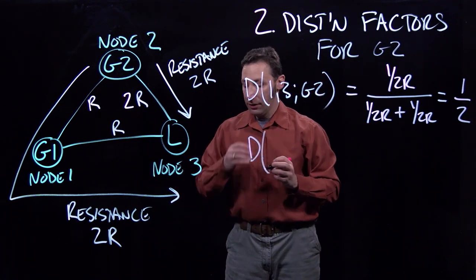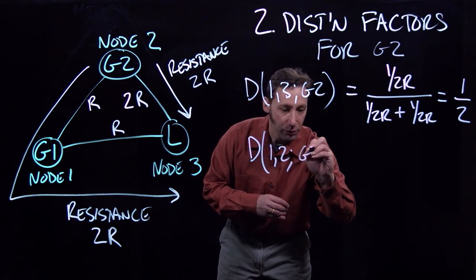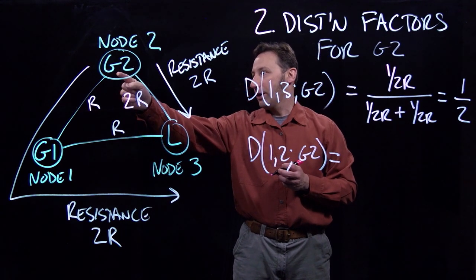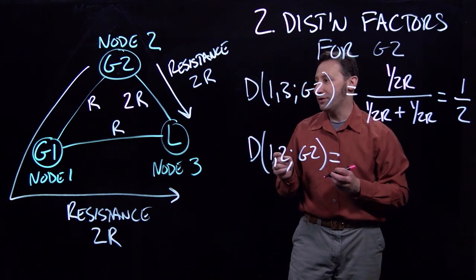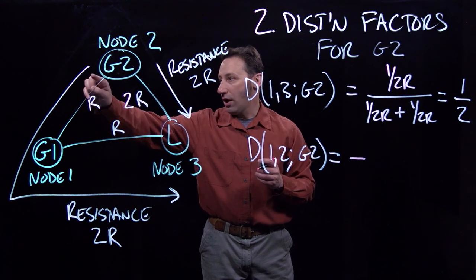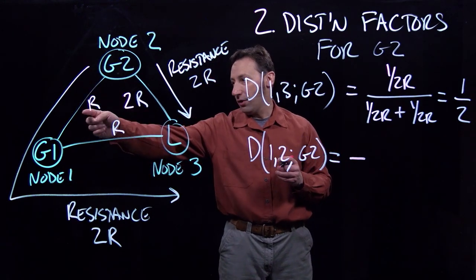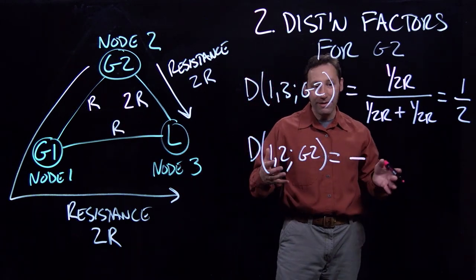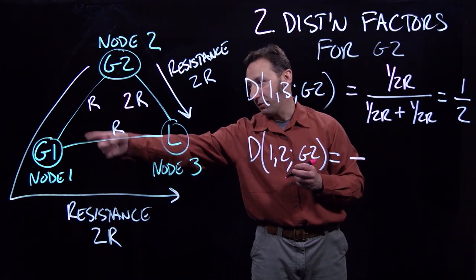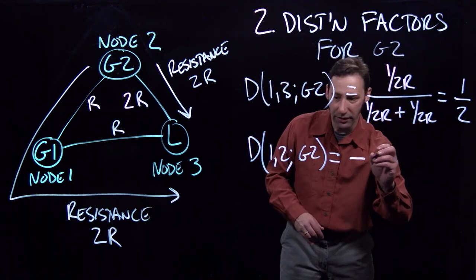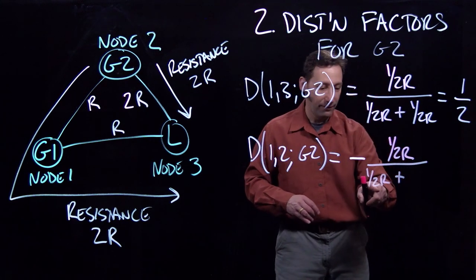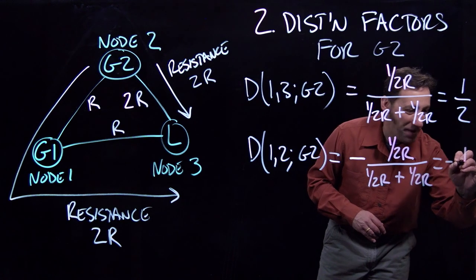The distribution factor on line 1 to 2 from G2 requires remembering that power going from node 2 to node 1 is in the negative direction, so there's a negative sign in front of the distribution factor. Both lines making up the indirect path have the same magnitude distribution factor. In the numerator we have 1 over 2R, and in the denominator 1 over 2R plus 1 over 2R, giving us negative one half.